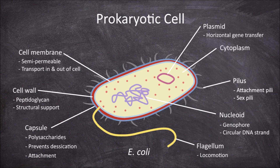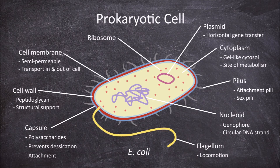Within the cytoplasm is a gel-like liquid called the cytosol, which functions as the site of most metabolism within the prokaryotic cell. Within the cytoplasm there are also ribosomes. The ribosomes in prokaryotic cells are smaller than those in eukaryotic cells. The function of the ribosomes is in the synthesis of proteins during translation.